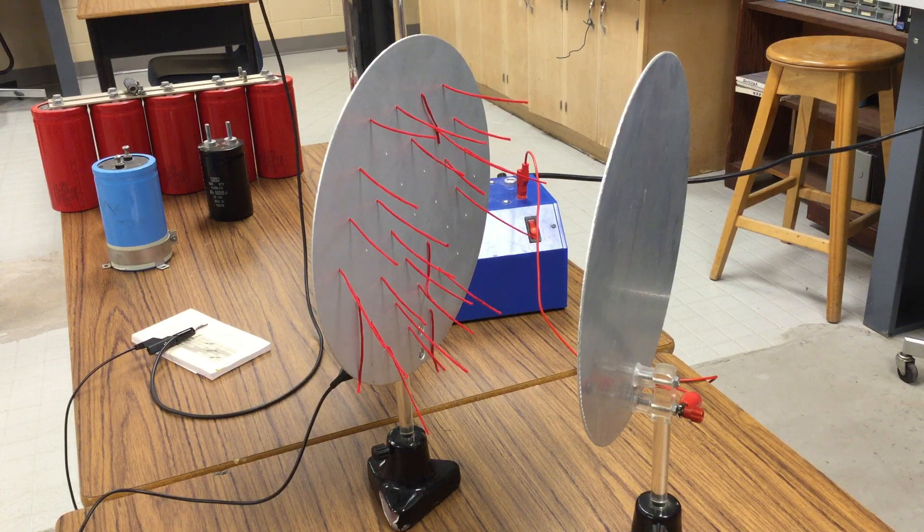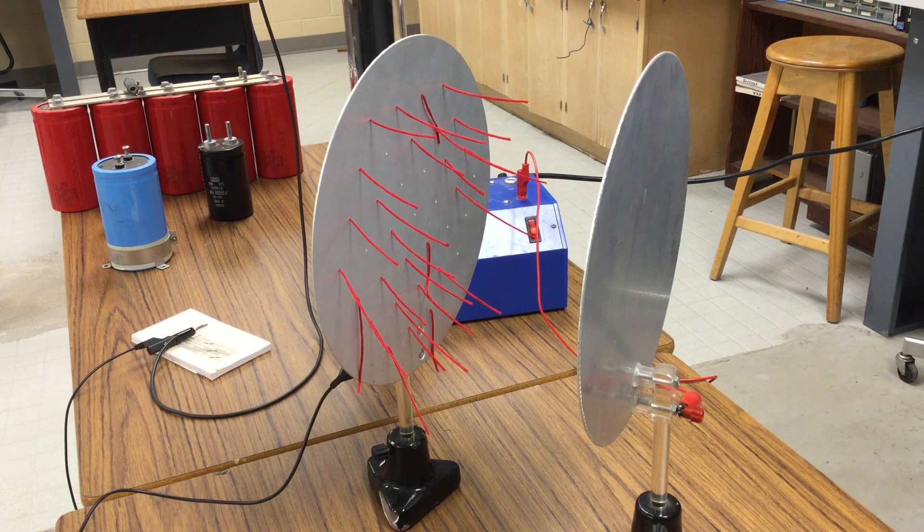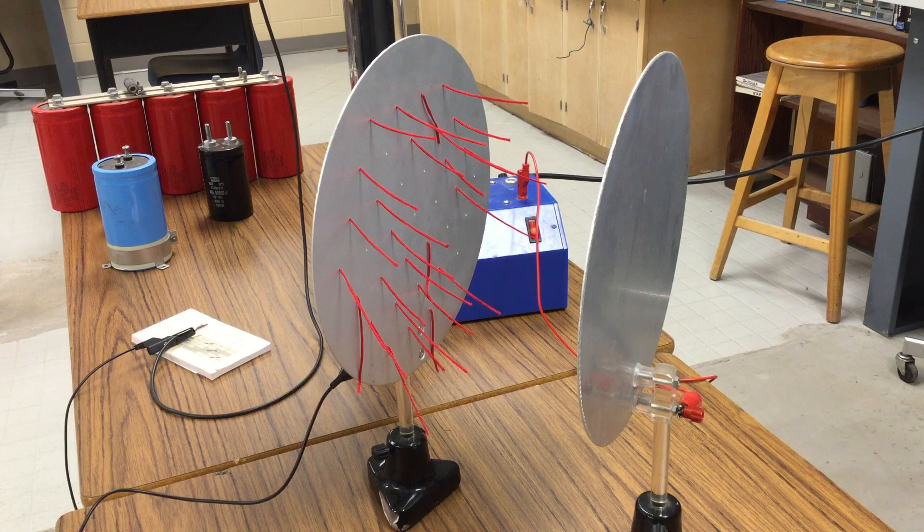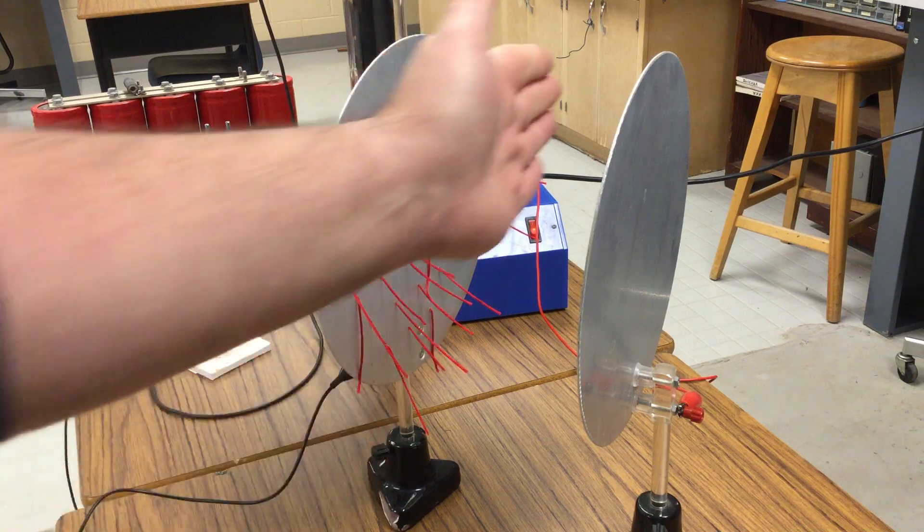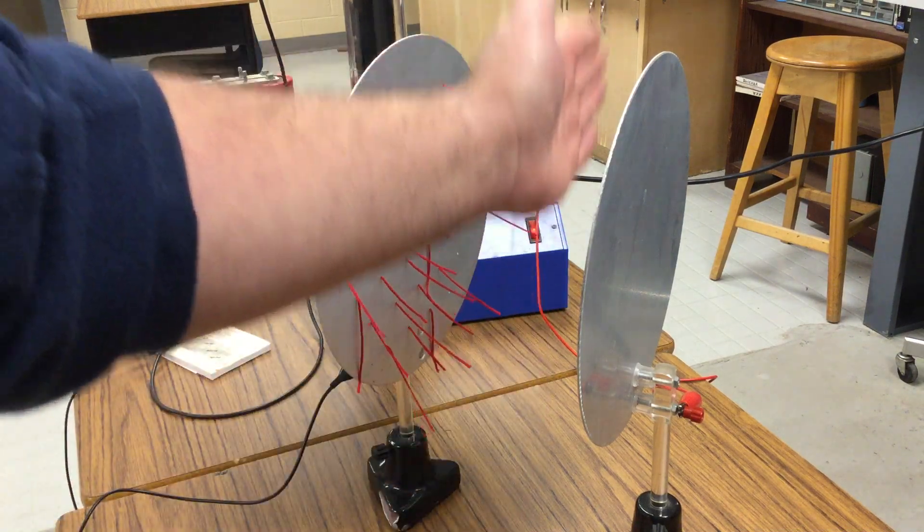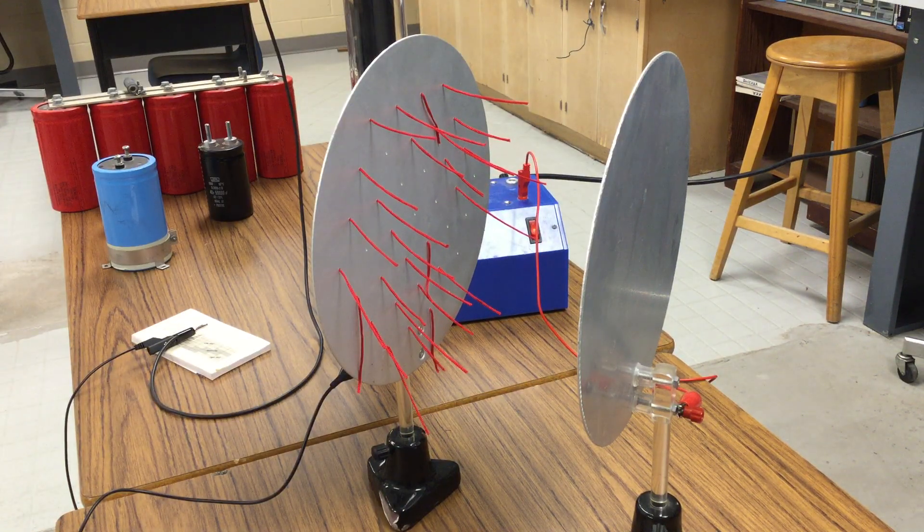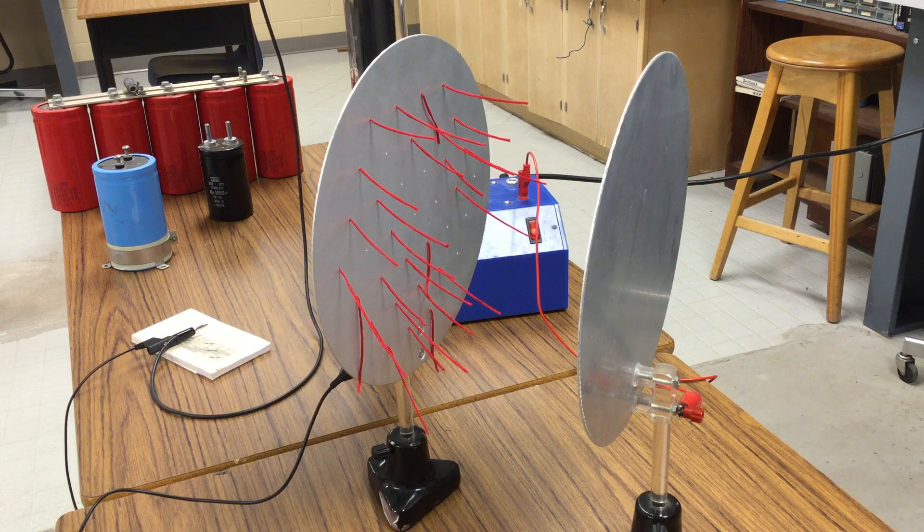The distance between the plates, the surface area of the plates, as well as the insulating material or the dielectric material between the plates, all impact the capacity of the capacitor to store voltage.